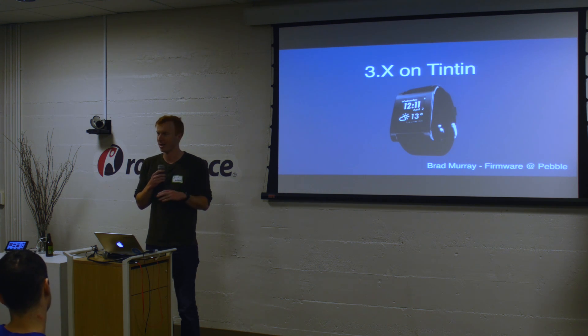That name needs a bit of unpacking. When we refer to 3x, we're talking about the 3.0 plus line of firmwares — our third generation after the 1.0 time back in 2013, the 2.0 time in 2014 with the App Store, and then last year when we launched Pebble Time, we went into 3.0 with Timeline and Infinite Apps. The Tintin part — internally we refer to the product you know as Pebble Classic, or the OG Pebble, with the codename Tintin. So this project is called 3x on Tintin because we're bringing that 3.x firmware back to the Pebbles we first manufactured in 2012.